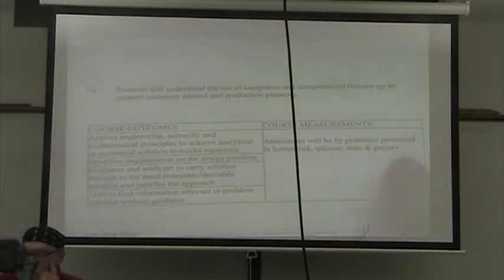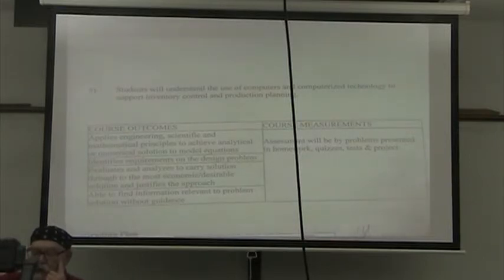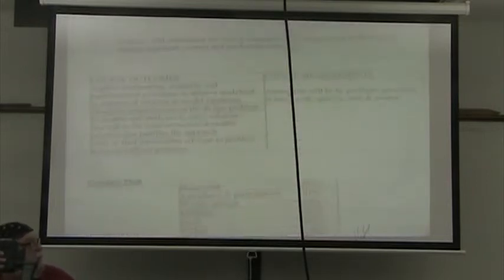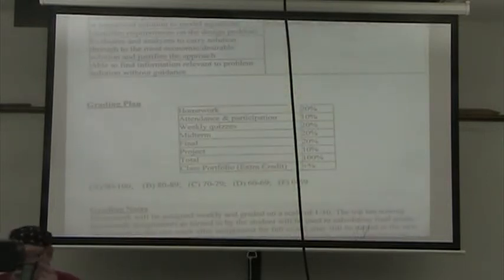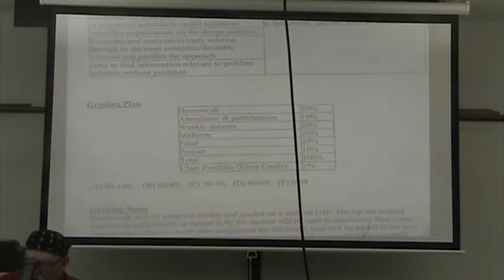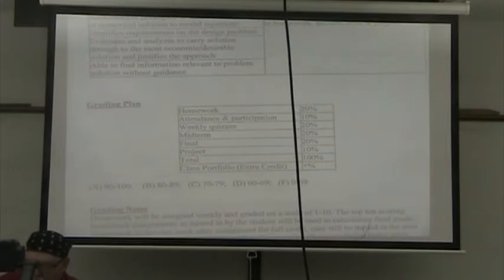The assessment of these will be in problems presented in homework, quizzes, tests, and the project. Grading plan: Homework will count for 20 percent. Attendance and participation for 10 percent. Weekly quizzes for 20 percent. Midterm for 20 percent. Final for 20 percent. Project 10 percent. The total, obviously, is 100 percent.